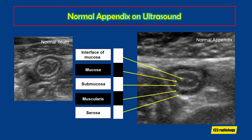The normal sonographic appearance of the appendix is that it has inner hypoechoic mucosa without folding. Its diameter is less than 6 mm and it is compressible. Sometimes it contains air, sometimes stool, and there is normal mesenteric fat surrounding it.